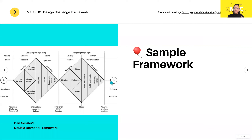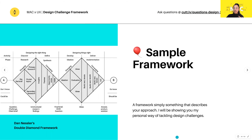Now you're probably asking how do we actually tackle these design challenges? When tackling these challenges, there are certain frameworks you can follow. A framework basically just describes your approach to something. One example is Dan Nestler's Double Diamond framework, which you can see on the left here. It breaks down into four different parts: research, analysis, ideation, and implementation — with multiple steps within each. This is pretty much what a framework is: it just describes your approach.